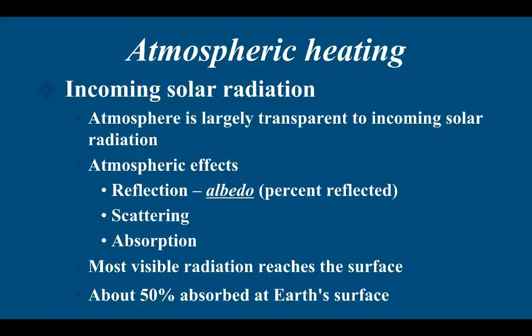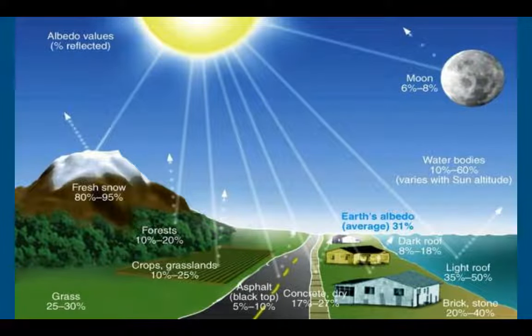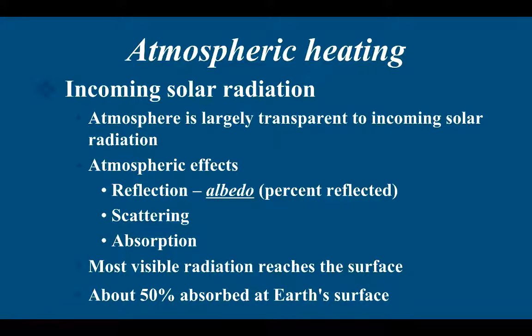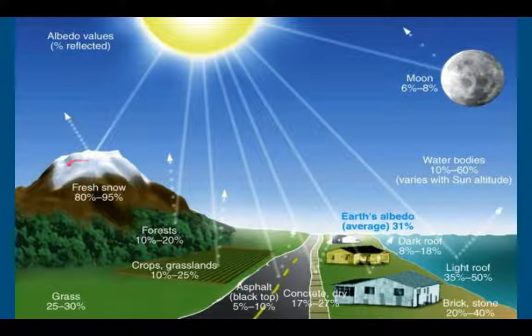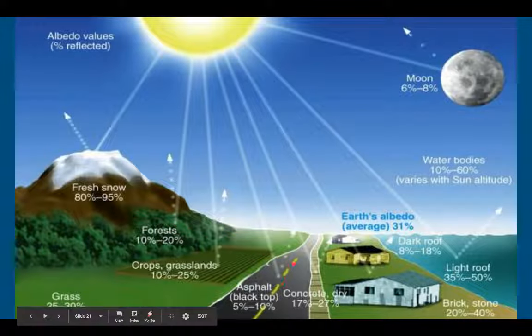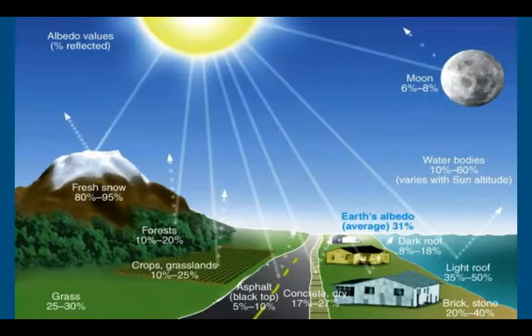With incoming solar radiation, certain things will happen to the sun's rays as they hit the Earth. Some will be reflected - this is albedo, which is a very important word. Albedo is how much is reflected. Fresh snow on a mountain has a high albedo, whereas a black asphalt road has a low albedo - it's being absorbed. Some of the sun gets scattered and also absorbed.